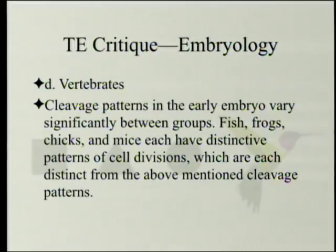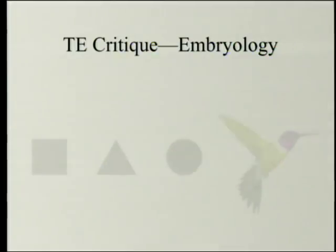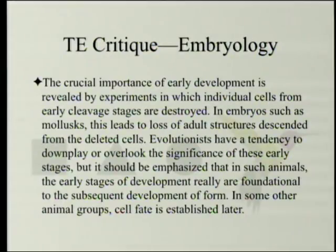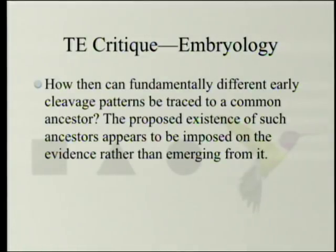Vertebrates also show significant variation: fish, frogs, chicks, and mice each have distinctive patterns of cell divisions, distinct from the above-mentioned cleavage patterns. The crucial importance of early development is revealed by experiments in which individual cells from early cleavage stages are destroyed — in embryos such as mollusks, this leads to loss of adult structures descended from the deleted cells. Evolutionists tend to downplay the significance of these early stages and focus on the phylotypic stage. But these early stages are foundational to subsequent development of form. How can fundamentally different early cleavage patterns be traced to a common ancestor? The proposed existence of such ancestors appears to be imposed on the evidence rather than emerging from it.